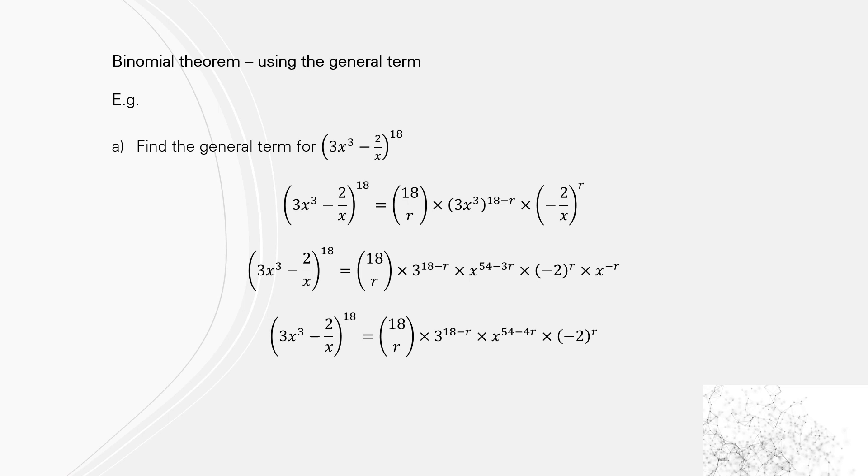The general term uses an r, like 18Cr. We know that the first term is to the power of 18 minus whatever the r value is, and the second term is to the power of r.